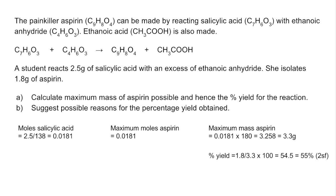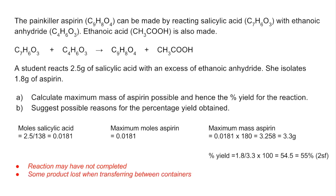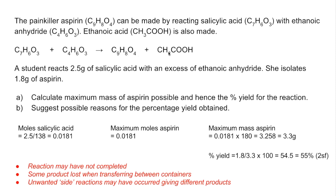Why don't we get 100% yield? Some possible reasons: the reaction may not have completed, so you stop it before the maximum amount is made. If the process involves transferring between containers — beakers, flasks, or a filtering stage — you lose product each time. You might also get unwanted side reactions producing different products; for example, aspirin and ethanoic acid could recombine and consume the aspirin you've already made.